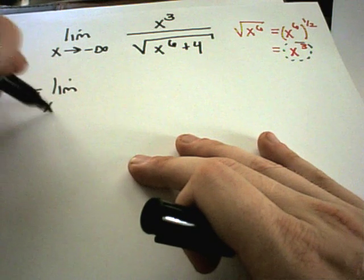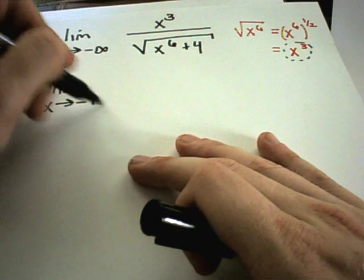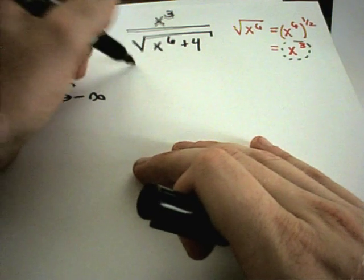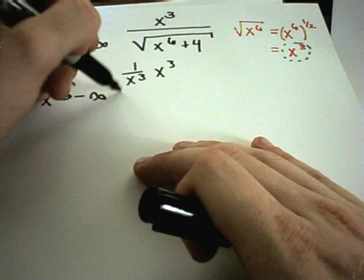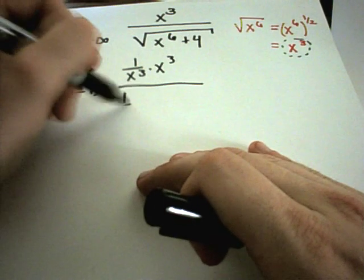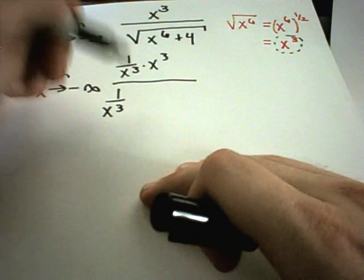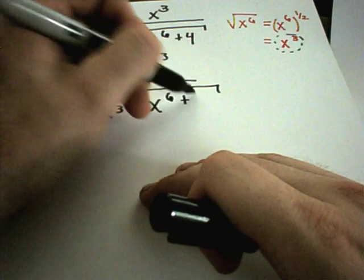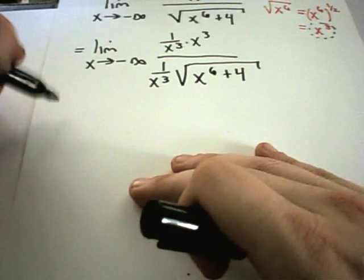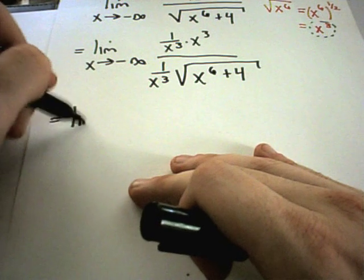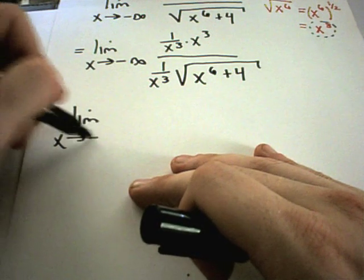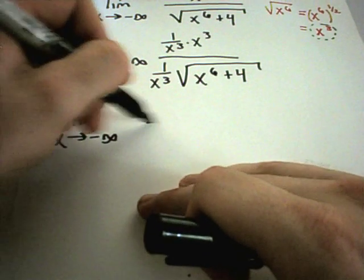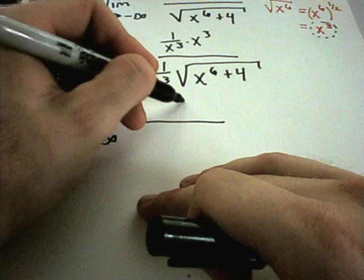Alright. So I've got the limit as x goes to negative infinity. I'll have 1 over x to the third times x to the third in the numerator. I'm going to have a 1 over x to the third in the denominator. And I've got my x to the sixth plus 4 still hanging out. Okay. On top, I have the limit as x approaching negative infinity. Excuse me. On the top, I'll have x cubed over x cubed, which is 1.